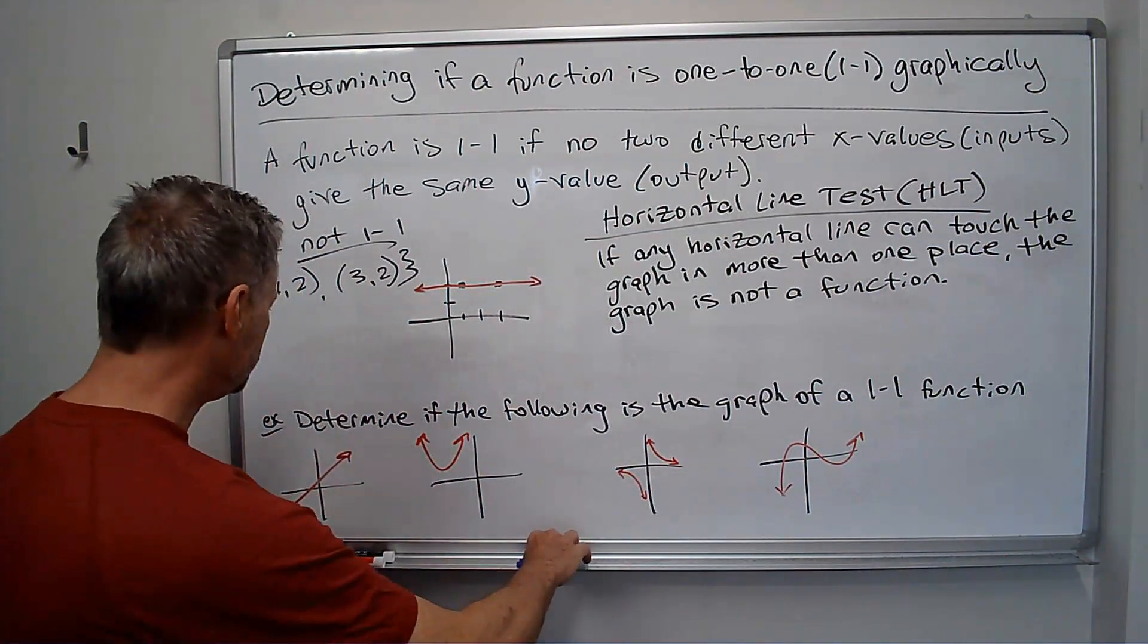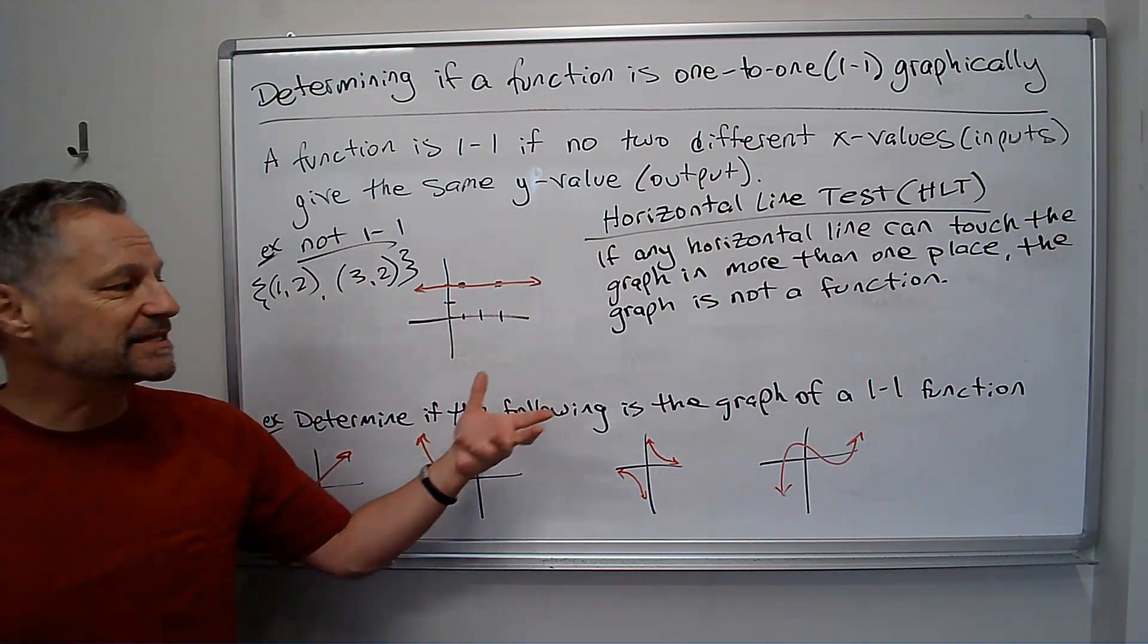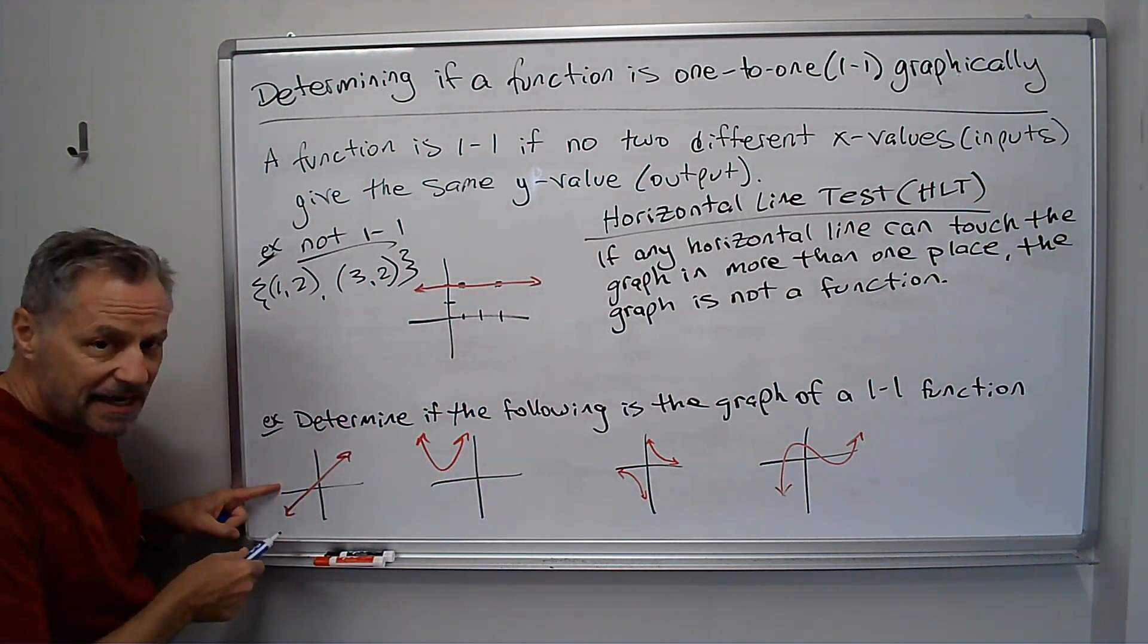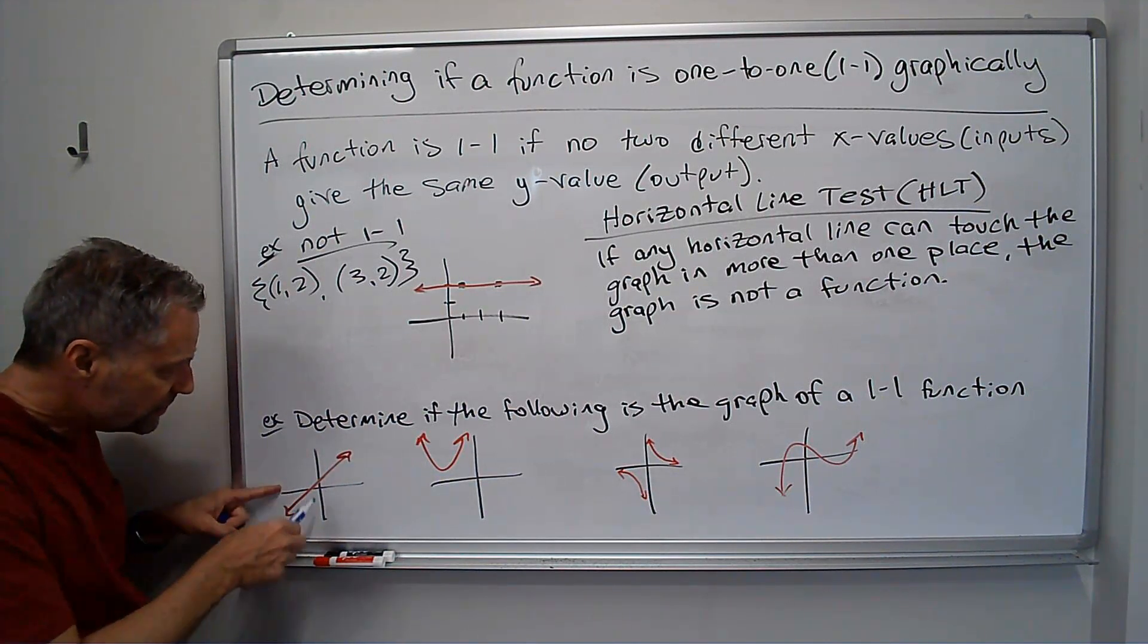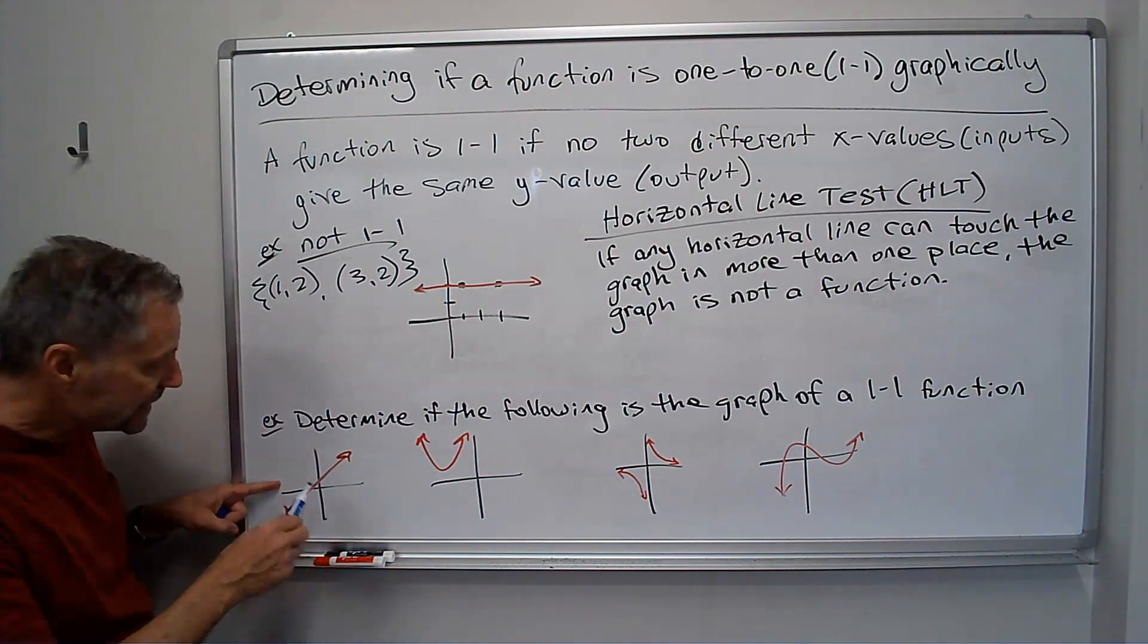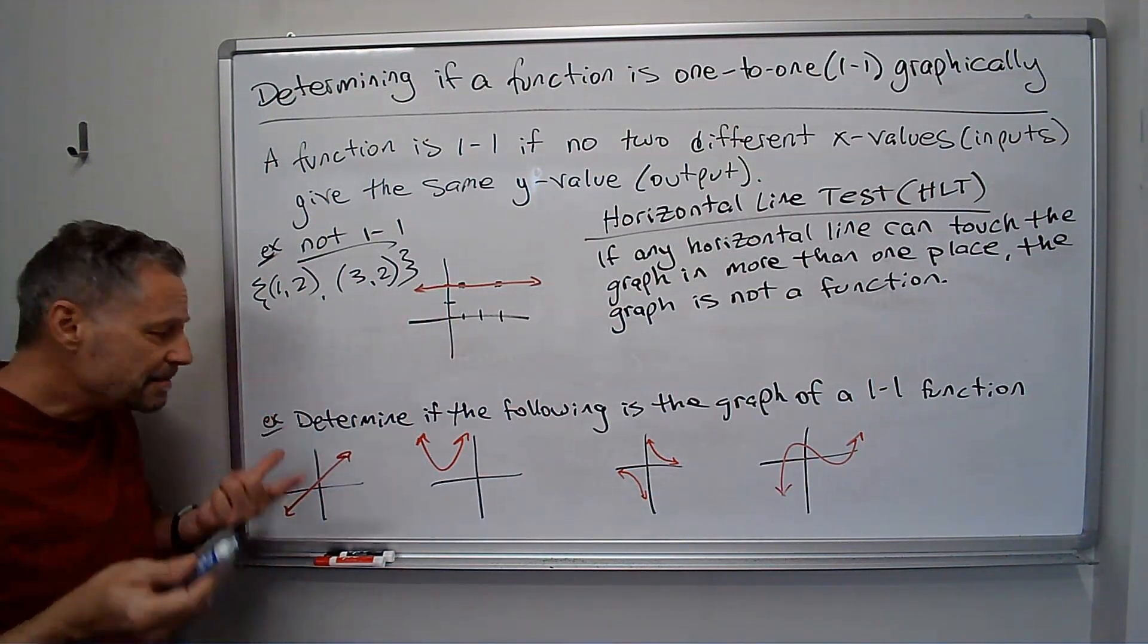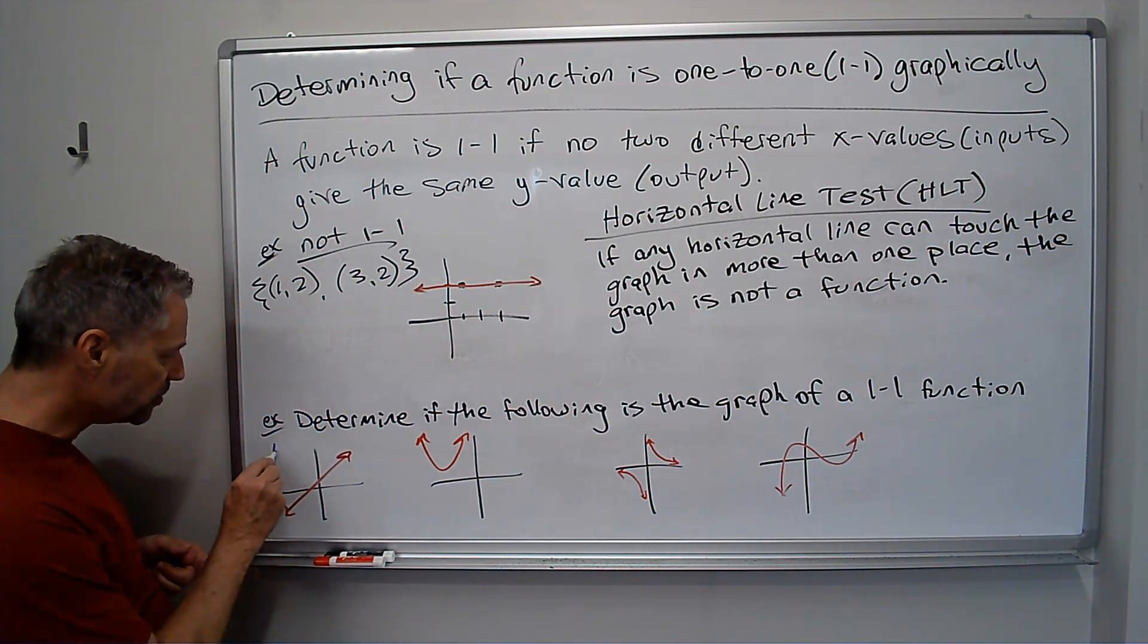So here I've got four examples. Determine if the following is the graph of a one-to-one function. Well, this line that I have here, any horizontal line that I draw is only going to cross it once. So it must be a one-to-one function. This one is one-to-one.